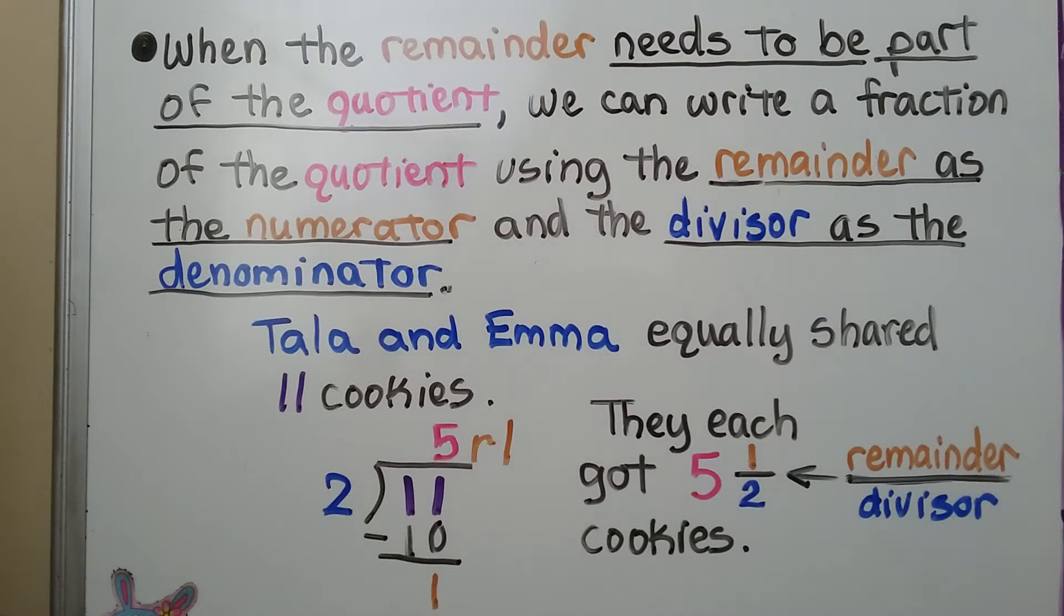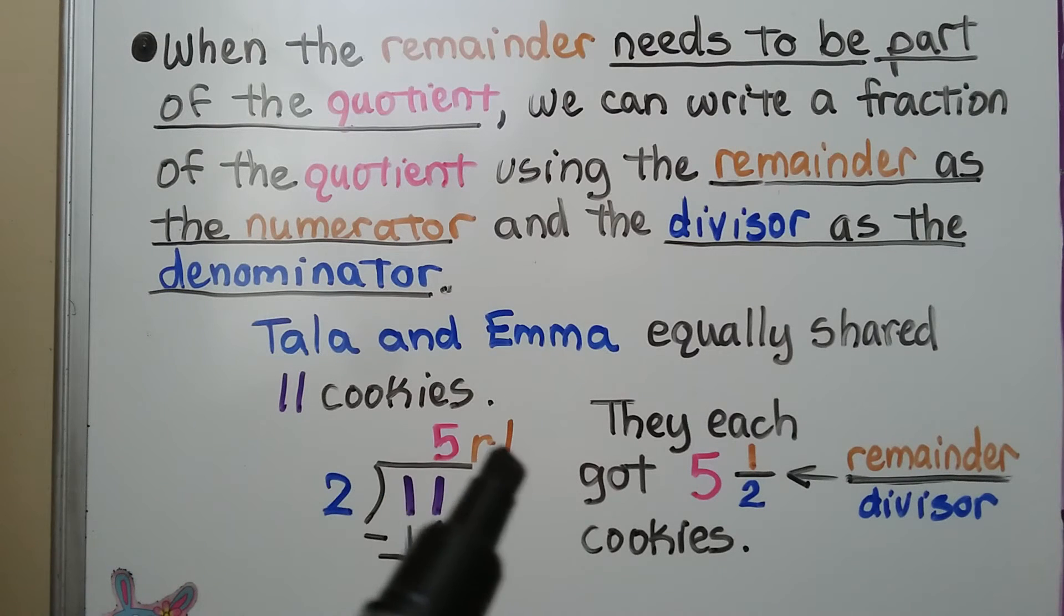When the remainder needs to be part of the quotient, we can write a fraction of the quotient using the remainder as the numerator and the divisor as the denominator. Tala and Emma equally shared 11 cookies. Tala and Emma, that's 2 people, so we're going to do 11 cookies divided by 2 people. That's 5, remainder 1.